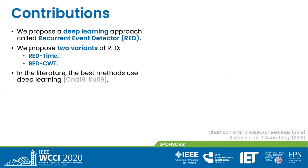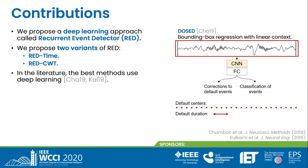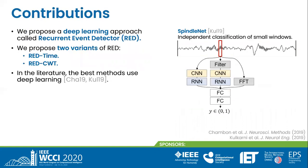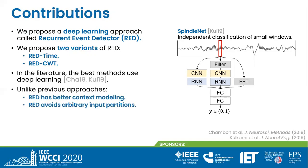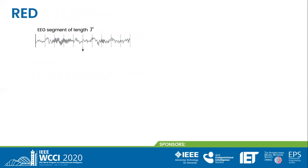In the literature, the best methods use deep learning. One of them is DOSED. They specify default events with a default duration and evenly spaced centers. A convolutional neural network is applied to a large EEG segment, and then a fully connected layer predicts both the deviations from defaults and the classes. This method is limited by the adjustment of the default duration and centers, and by its linear processing of context at the last layer. Another method is SpindleNet, specific for sleep spindles. A small window of EEG and its filtered version are processed in parallel by a stack of convolutional and recurrent layers. Then fully connected layers use these outputs together with power features to predict whether the window belongs to a spindle. This method is limited by the adjustment of the window width and by its small context. Unlike previous approaches, RED has better context modeling and avoids the use of arbitrary input partitions.